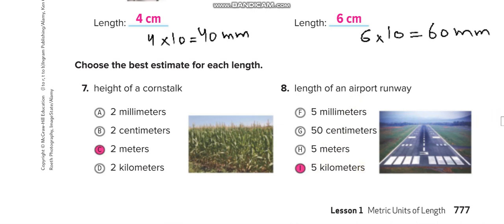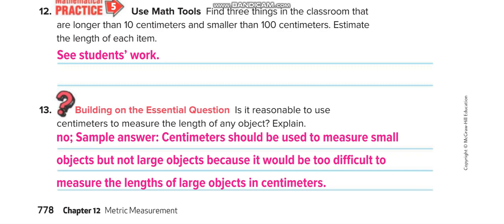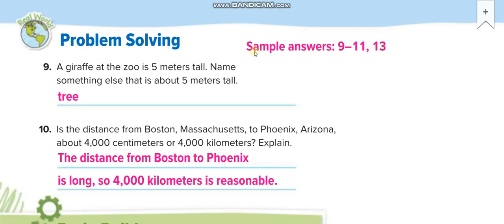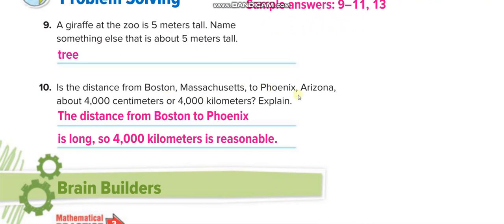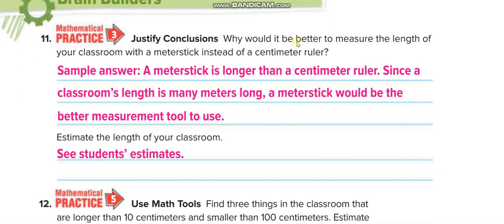A giraffe at the zoo is five meters tall — name something else that is about five meters tall. A tree, for example. The distance from Boston to Arizona is about four thousand kilometers — not centimeters. Of course, the distance between two locations that far apart is measured in kilometers.